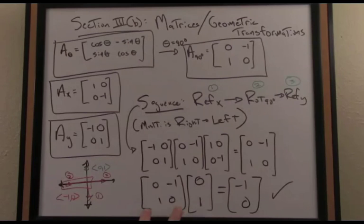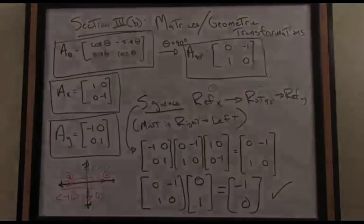the multiplication, in other words, the action of multiplying any vector in the plane, in particular 0, 1, by this matrix is equivalent to performing this sequence of geometric transformations.